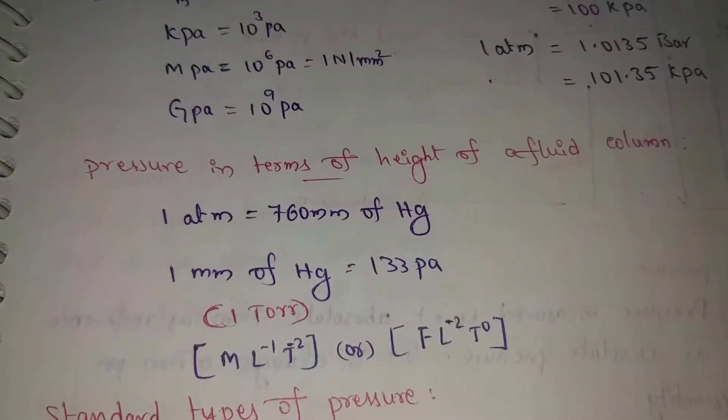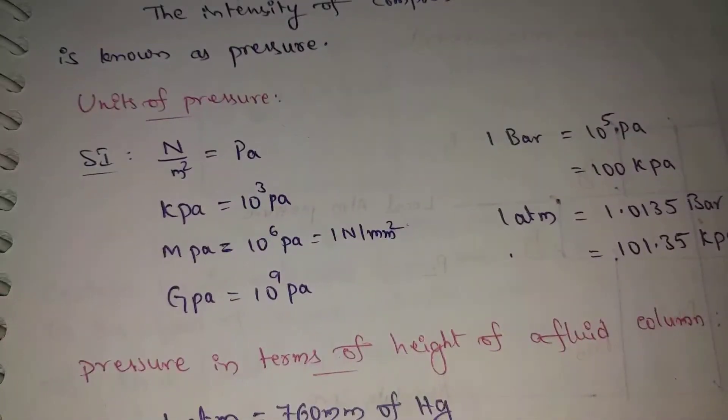760 mm of Hg. 1 mm of Hg equals 133 Pascal. Other dimensions: M L power minus 1 T power minus 2, or F T power minus 2 T power 0. Pressure equals units. If you like this video, please like my video and don't forget to subscribe to my channel. Thank you for watching.